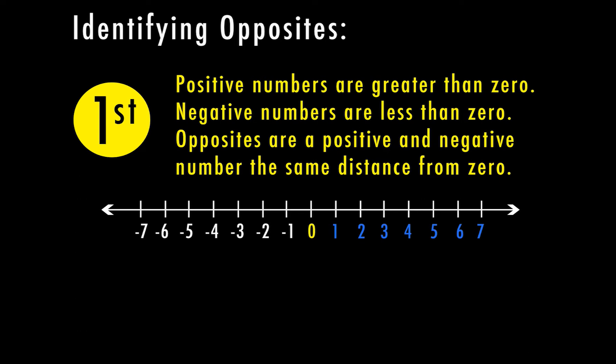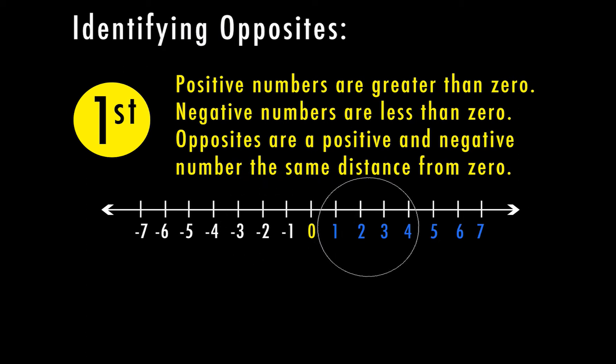Opposites are a positive and a negative number that are the same distance from zero. So if I look at the number negative two, the other side of zero is positive two. I have two places to get to zero and then two more places to the other side. So two and negative two are opposites. If I have the number negative five, the opposite of negative five is the same distance from zero on the other side — that would be positive five.